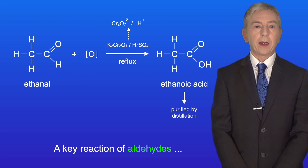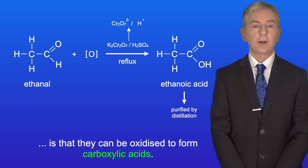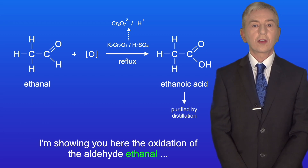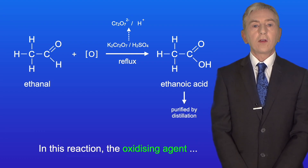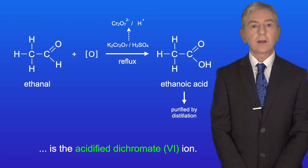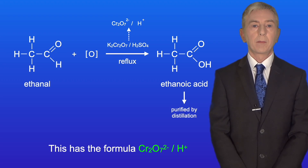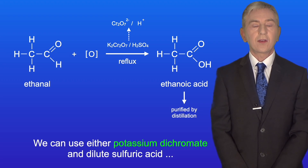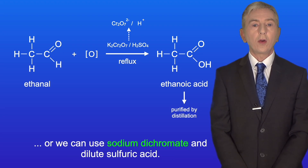A key reaction of aldehydes is that they can be oxidized to form carboxylic acids. Here I'm showing the oxidation of the aldehyde ethanal, forming ethanoic acid. In this reaction the oxidizing agent is the acidified dichromate-6 ion, with the formula Cr₂O₇²⁻ / H⁺. We can use either potassium dichromate or sodium dichromate with dilute sulfuric acid.